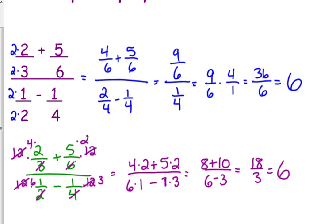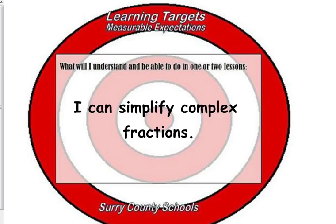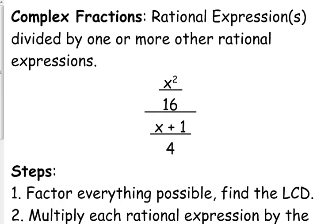In this case, I'm not sure which one's quicker. So, like I mentioned, complex fraction is a rational expression that is divided by one or more of the rational expressions. So this is a very simple example of that. We've got x squared over 16 over x plus 1 over 4. It's a very simple example of a complex fraction.